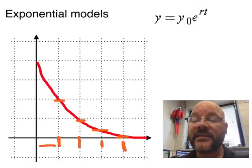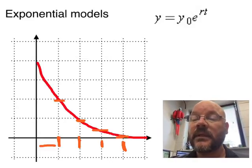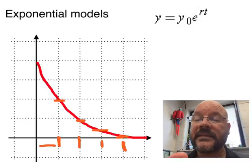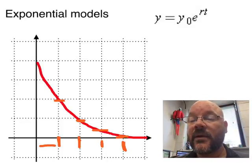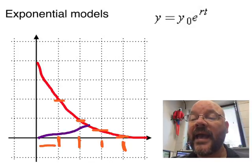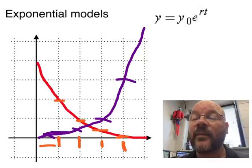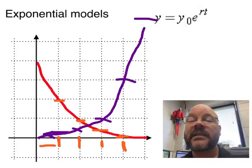It can work the other way too. We could have something that's growing exponentially, and if it's growing exponentially, it's kind of the opposite. Instead of going by half every time, it's going to double every time — quarter, half, one, two, four — like that. It's going to double every step, just like that.